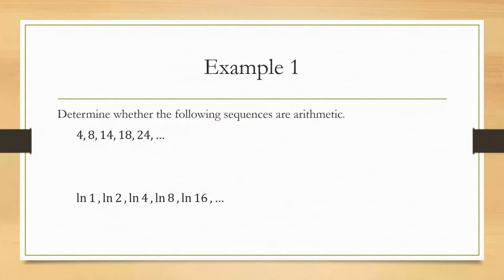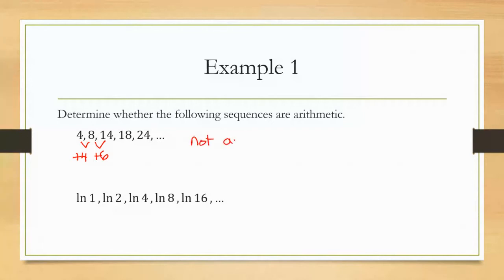The first example is to determine whether a sequence is arithmetic by checking if you're adding or subtracting the same value each time. For 4, 8, 14, 18, 24 — between 4 and 8 we're adding 4, but between 8 and 14 we're adding 6. Because the difference is not the same, this is not arithmetic. You can have sequences with a pattern that are still not arithmetic.